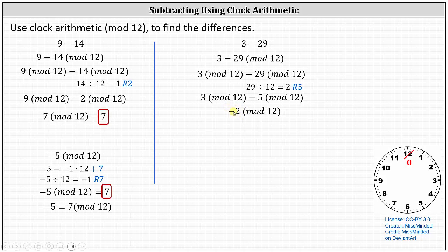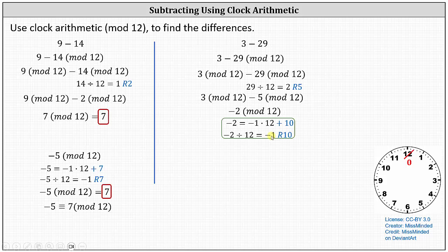We need to be careful with this negative number. We think of negative 2 as negative 1 times 12 plus 10, because the remainder must be from 0 to 11. Therefore, negative 2 divided by 12 is negative 1 with remainder 10, indicating negative 2 mod 12 equals 10.